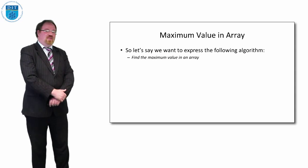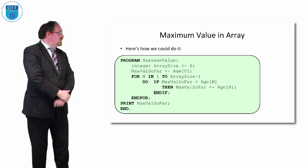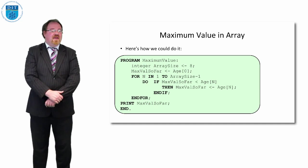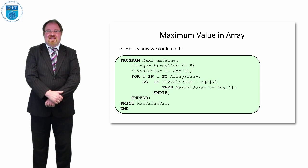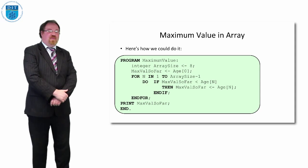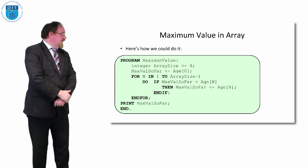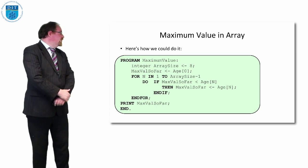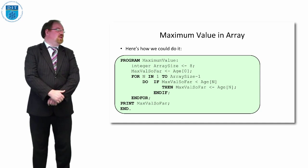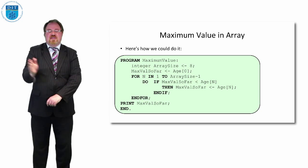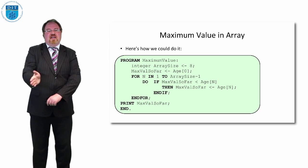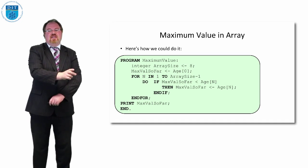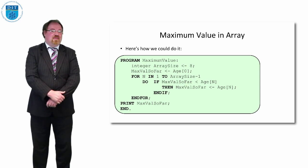The maximum is the opposite way around. For the maximum, we assume the first element is the biggest value in the array. Then we keep going through the array, and if we find a number bigger than the first value, that gets assigned as 'max value so far.' We keep going to the end, and if we find any number bigger than max value so far, that number becomes the new max value so far.